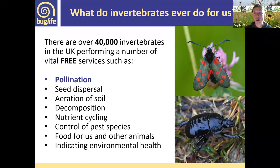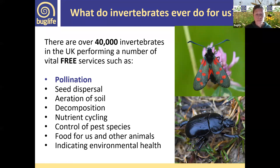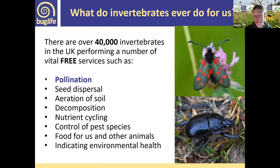What have invertebrates ever done for us? We have over 40,000 species of invertebrate in the UK, performing a number of vital free ecosystem services for us — things like pollination, control of pest species such as wasps or hoverflies eating aphids in our garden, nutrient cycling or aeration of the soil, and seed dispersal. So they do provide us with lots of free services.